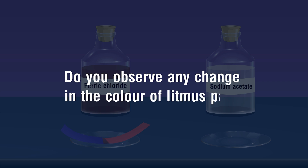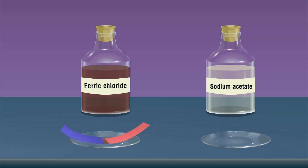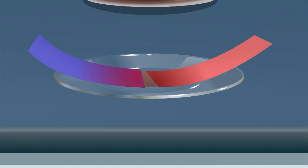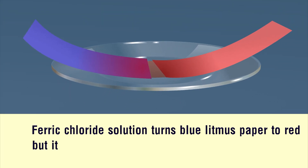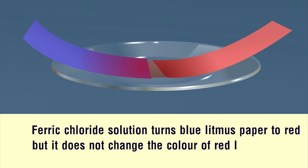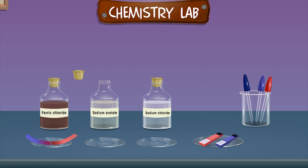Do you observe any change in the color of the litmus paper? Ferric Chloride solution turns blue litmus paper red, but it does not change the color of red litmus paper.